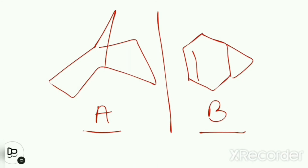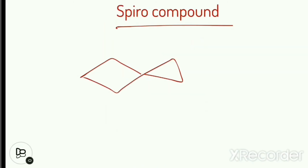Here are two compounds — compound A and compound B — two Bicyclic compounds. Pause this video and try to name them on your own. The answers are given in the description of this video. Try it carefully.